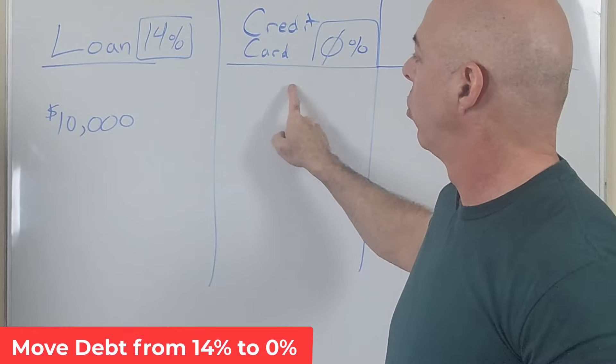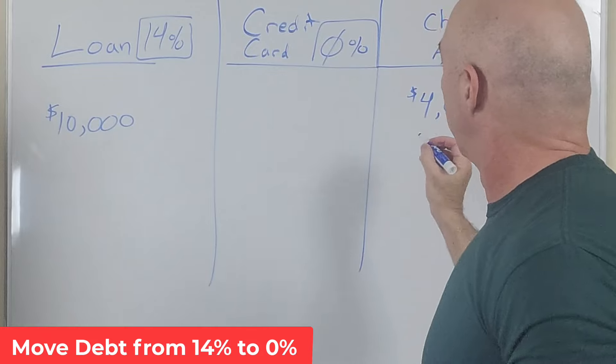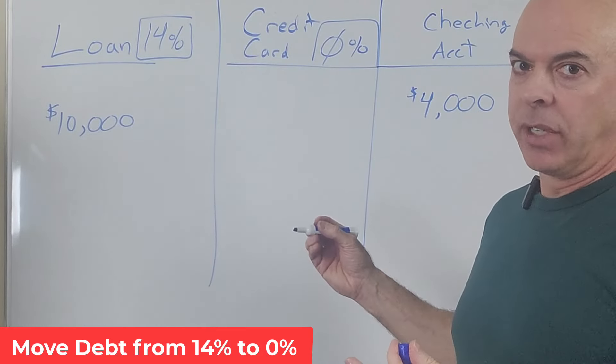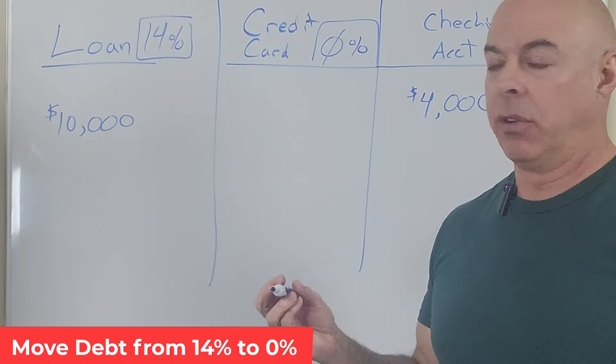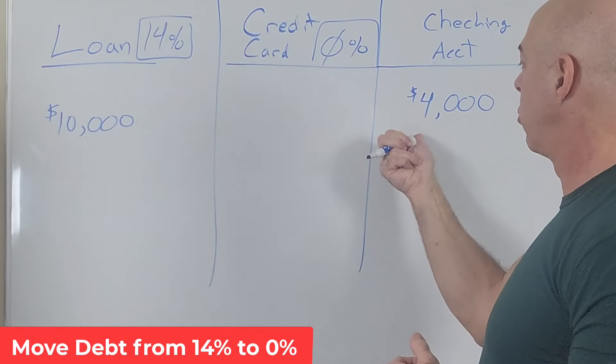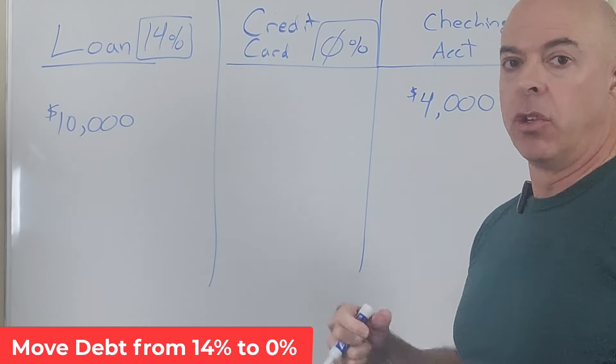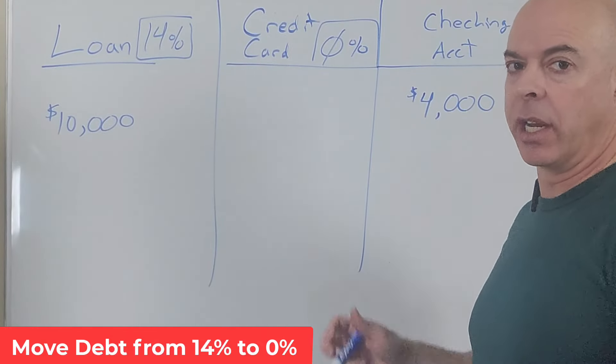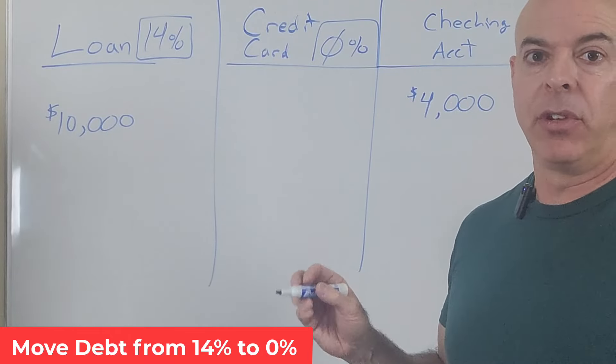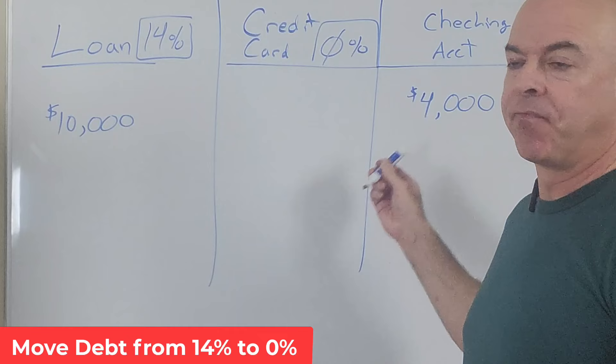So normally what you do is you take your loan payment and you make your loan payment. Now what you want to do is get this $10,000 off of the 14% and move it on to the 0%. But you can't use your credit card to make a payment. So what do you do? Well, let's say that out of this $4,000, $2,000 you use, you go to the grocery store, you use your debit card, it pulls it out of your checking. You go get gas, it pulls it out of your checking. You go eat out with friends, it pulls it out of your checking, whatever it may be.